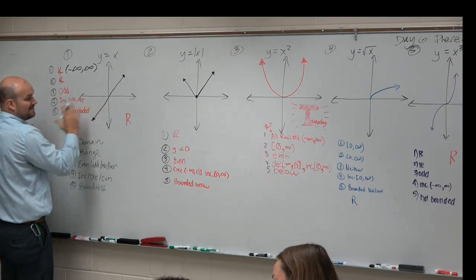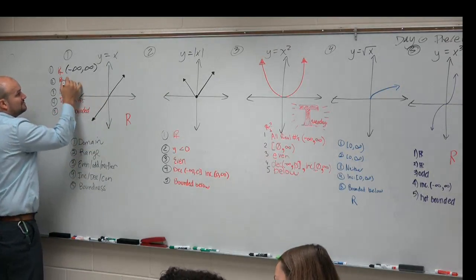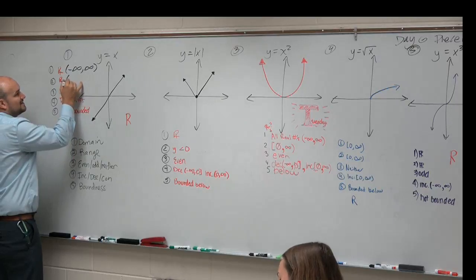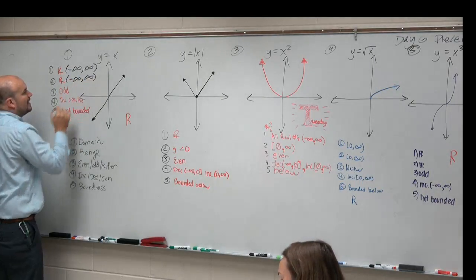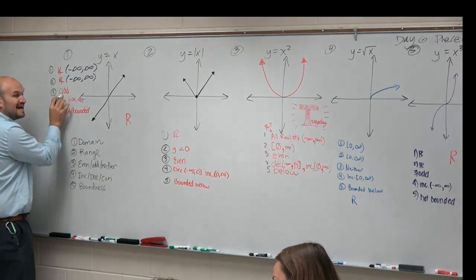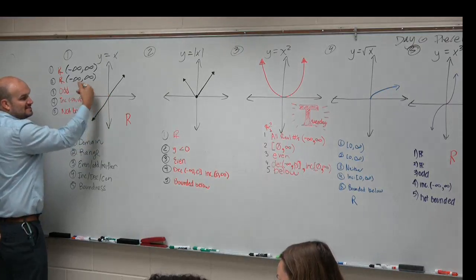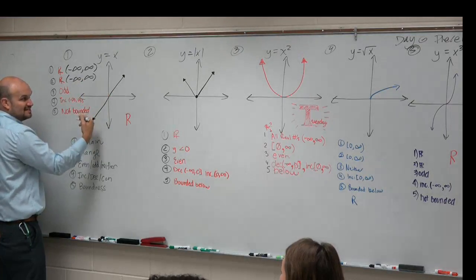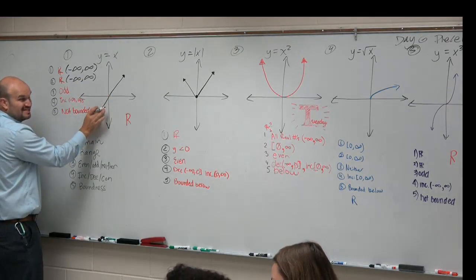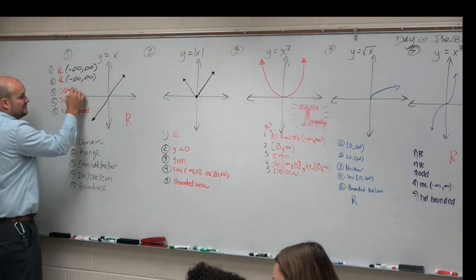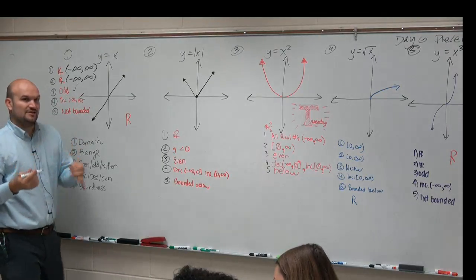You guys can see this graph keeps on expanding. The range goes down to negative infinity and up to positive infinity. The function is odd. The reason why it's odd is it's reflective about the y-axis as well as the x-axis. So when you reflect it twice, you get the exact same graph, so it is odd, and it's also increasing.